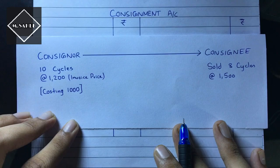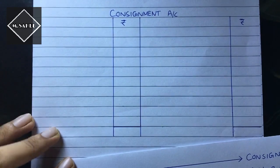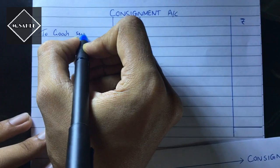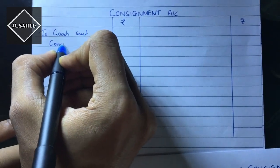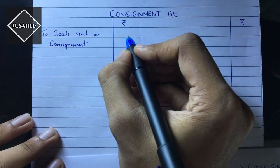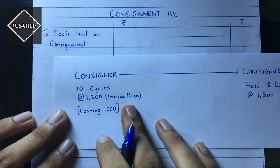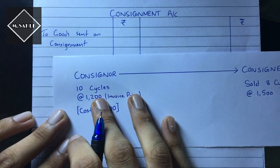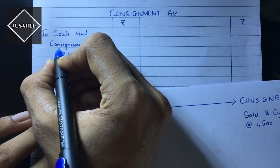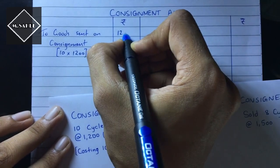We will prepare the consignment account. First we take goods sent on consignment on the debit side as usual. The only difference is that before we used to debit the cost price, but now since the consignor has sent the goods at the invoice price, we will take the invoice price — that is 1200. He sent 10 cycles, so 10 into 1200 is equal to 12,000.